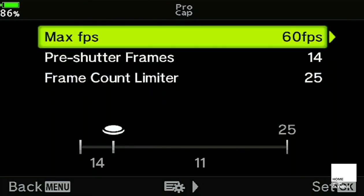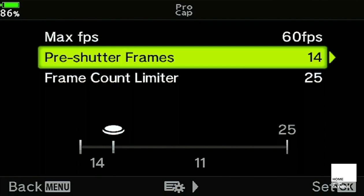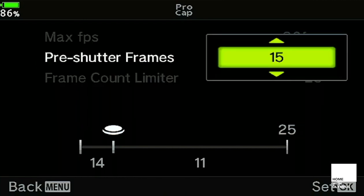Once I'm in there, I can set the maximum frames per second, so we'll stick with 60. We've also got our pre-shutter frames here, which is currently set to 14, and I think what we'll do with that is we'll just put a few more in just to capture a little bit more motion before we press the shutter. So we'll go into there and we'll set that up to around about 20.